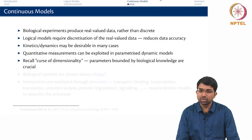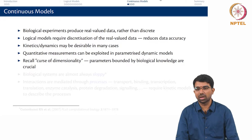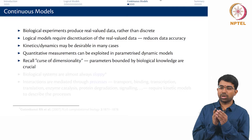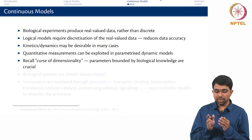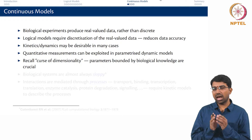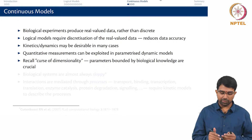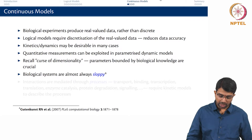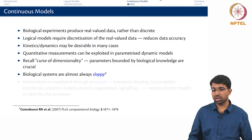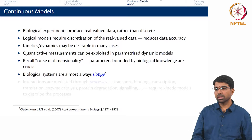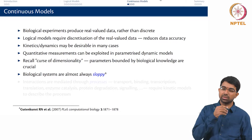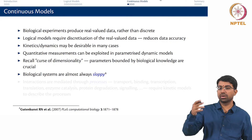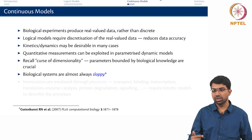Unless you have some biological knowledge — I know that this parameter is in this range, I know that my KM lies between 0.01 and 0.08 — unless I have that kind of information, it becomes very difficult to estimate the parameters. And the systems can also be very sloppy, in the sense that they can show the same behaviour for very large variations in parameters.